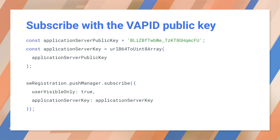In order to use VAPID, we need to generate a public-private key pair and subscribe to a push service using the public key. The public key must first be converted from URL base64 to a uint8 array. This is then passed into the application server key parameter in the subscribe method. The web push library provides the generate VAPID keys method, which, as you might expect, generates the keys.